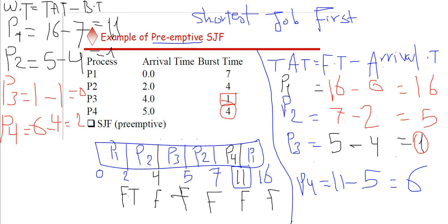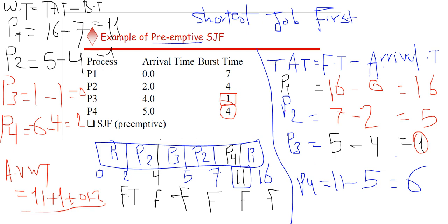We've calculated the waiting times and turnaround times. If you want the average waiting time: (11 + 1 + 0 + 2) divided by 4. I hope that was clear and easy. Thank you for watching and hope to see you soon.